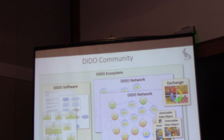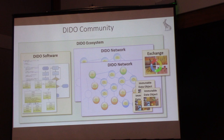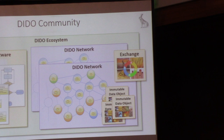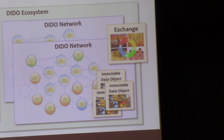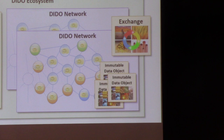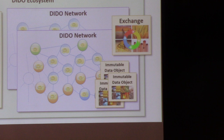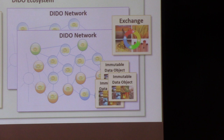A DIDO network might be involved with one or more immutable data objects. A domain might be a travel agency — one immutable object is frequent flyer miles, kind of like an ICO coin. But they might also have discounts and other objects. A power company has customer relations, billing, and then the running of the network — that's a different collection of data objects.